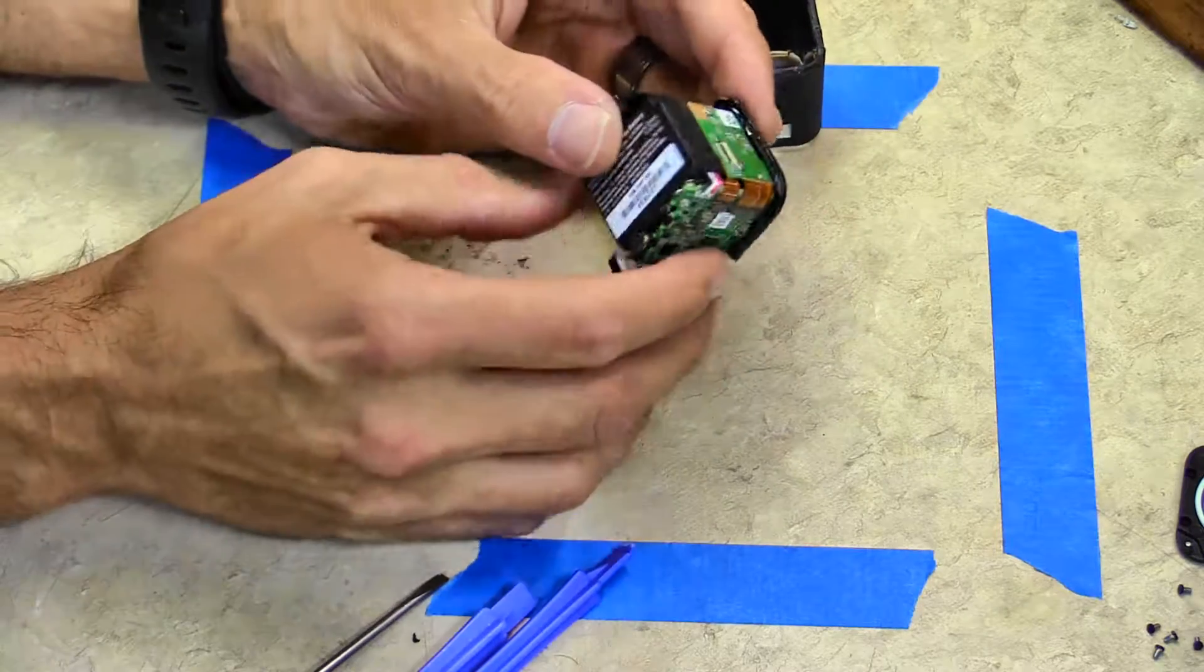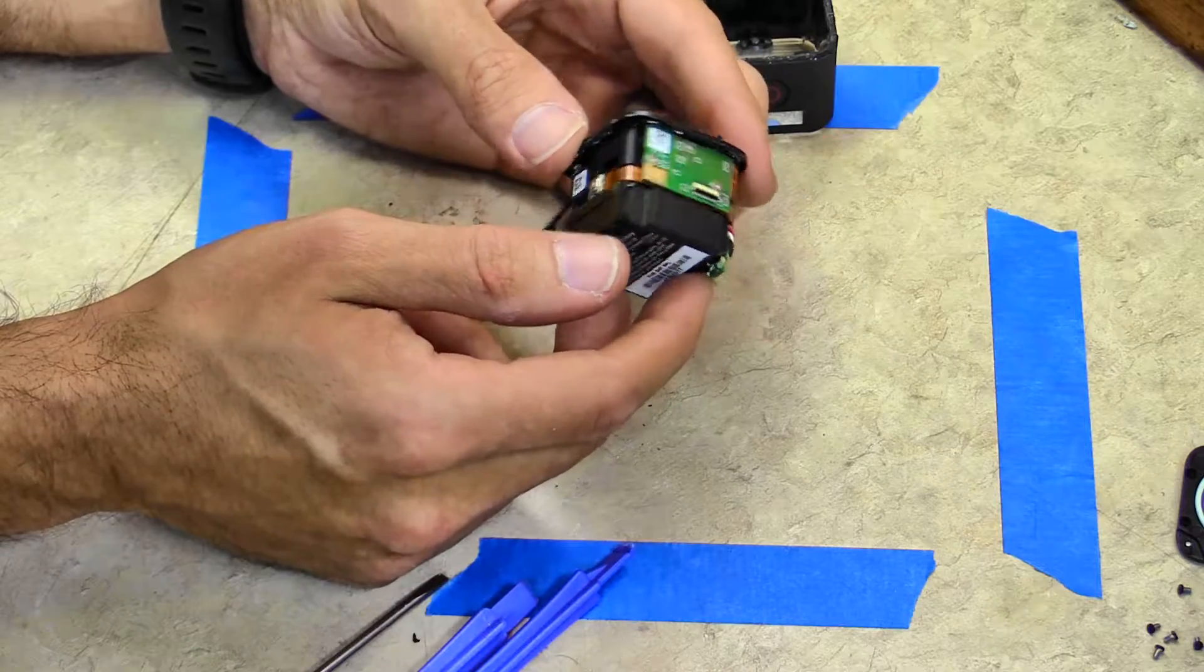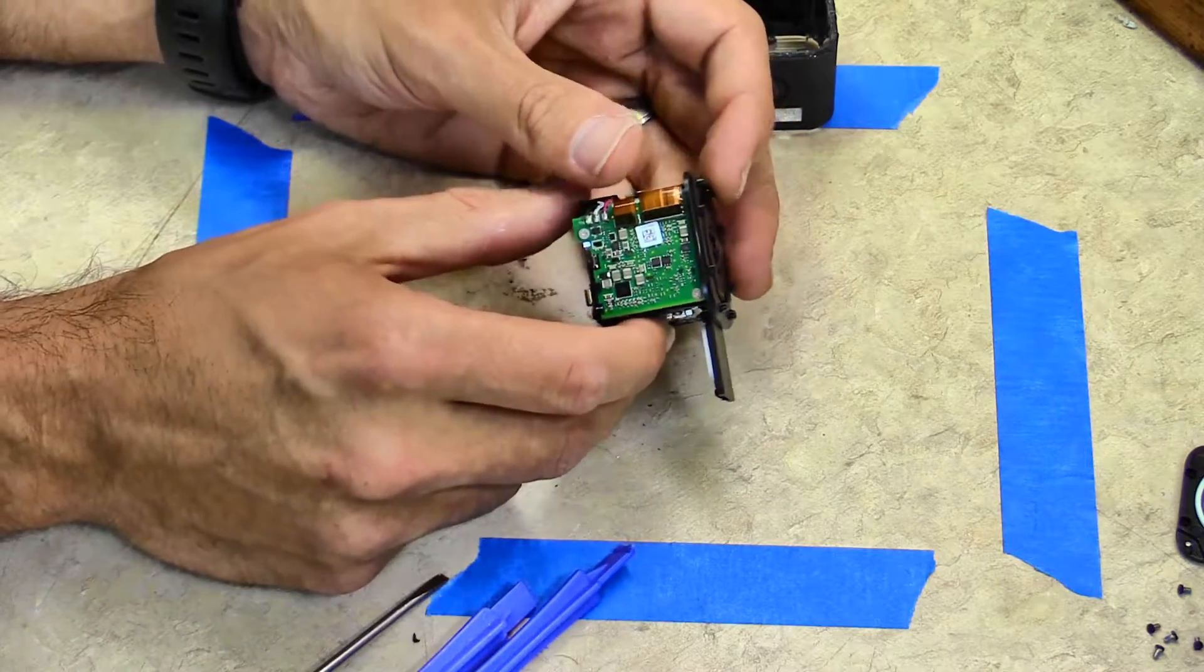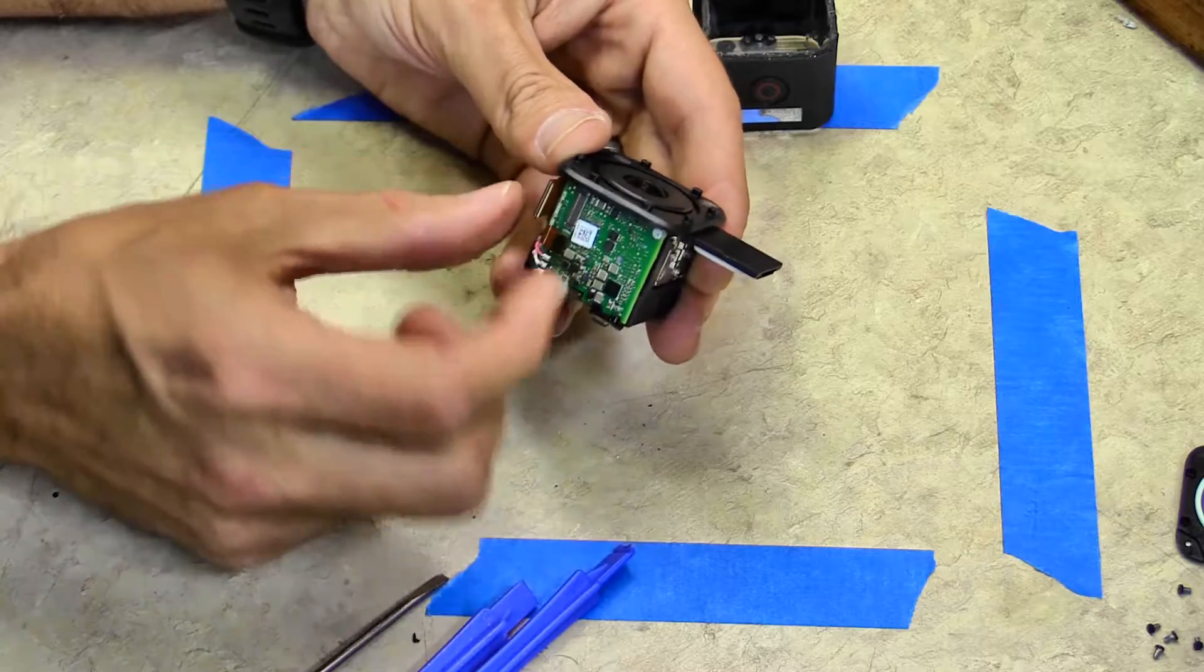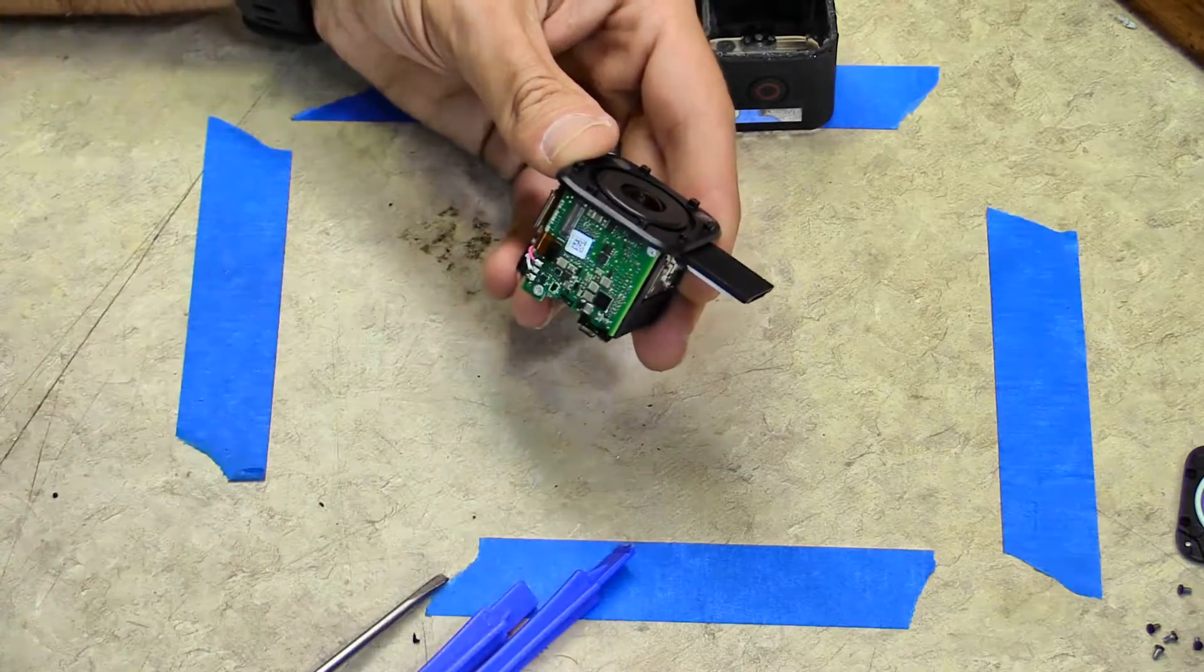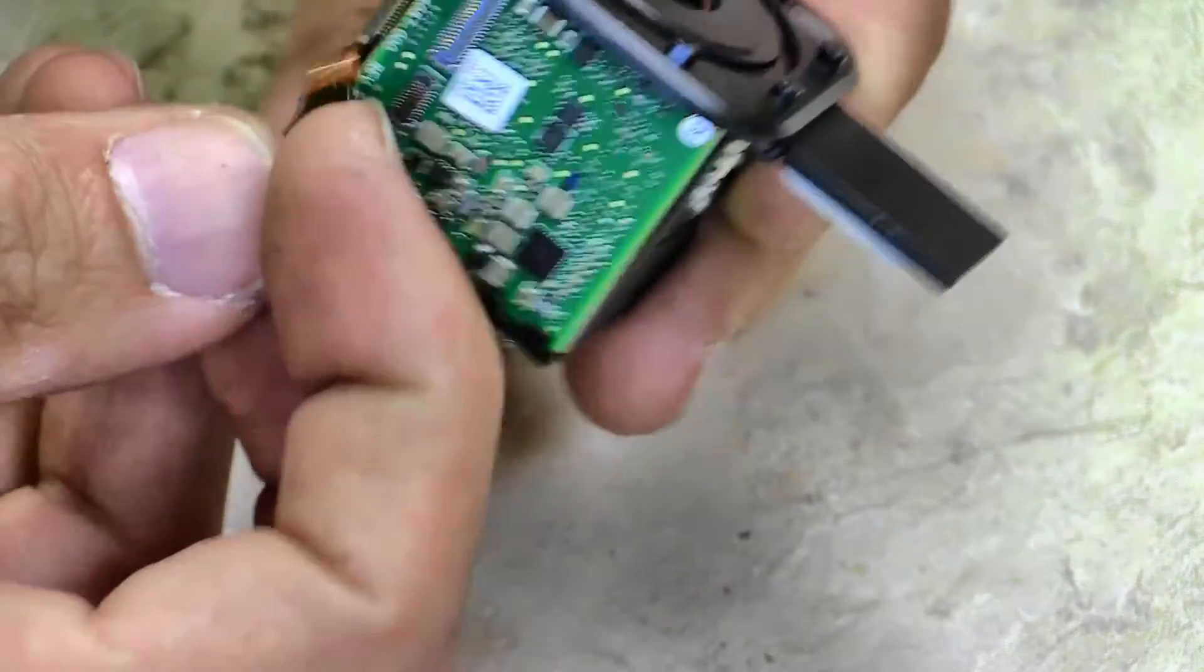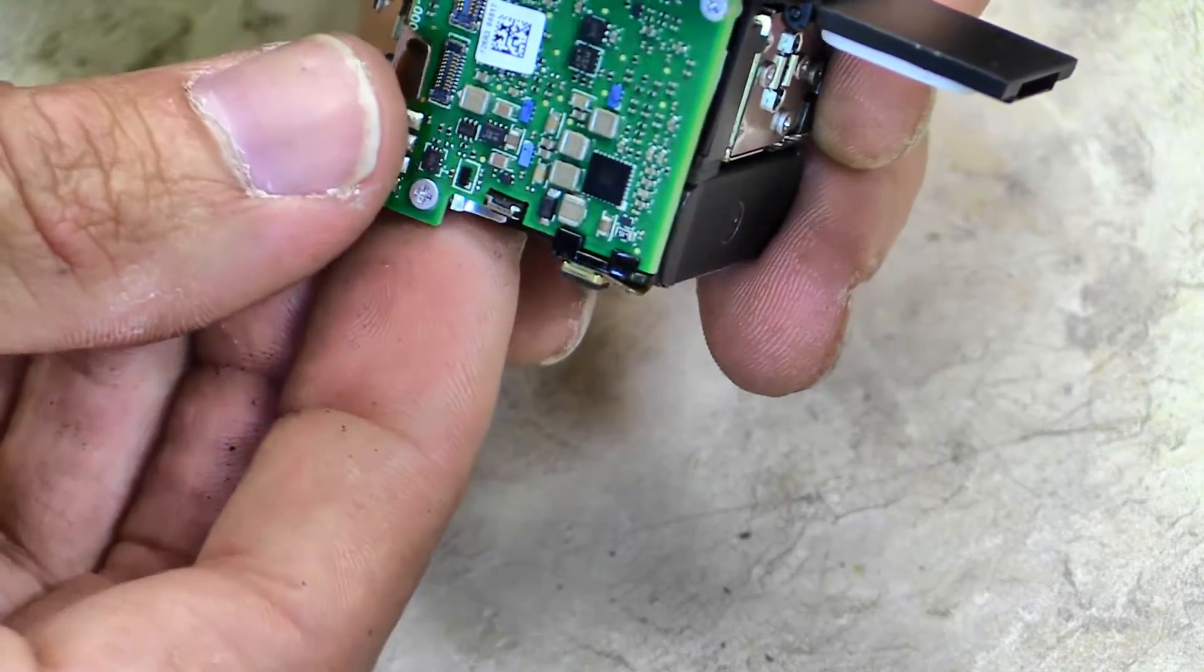So we've got the battery here and a couple of ribbon cables here. Let's start with these ribbon cables and pop them off and see about reseating them. These just pull up like this.